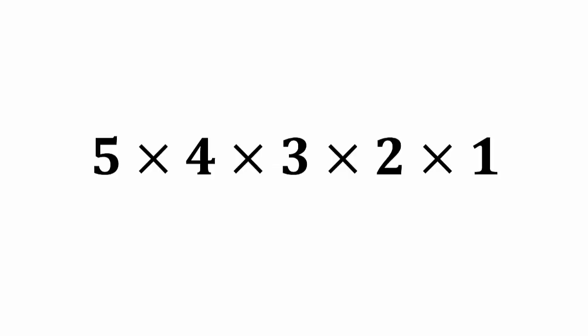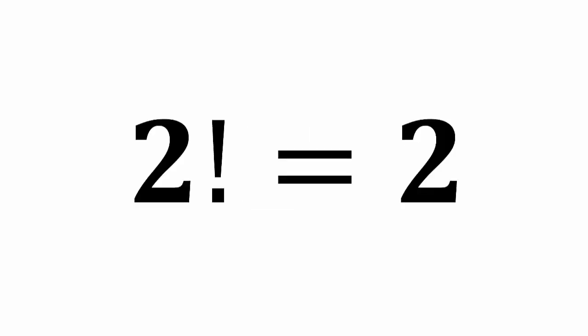5 factorial is defined to be 5 times 4 times 3 times 2 times 1. So let's play a game. What is 3 factorial? Well that's 3 times 2 times 1 which is 6. Now what about 2 factorial? Well that's 2 times 1 which is 2.